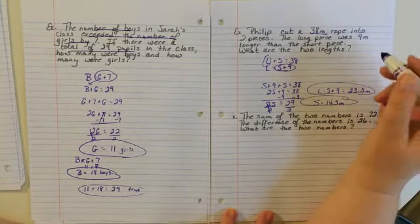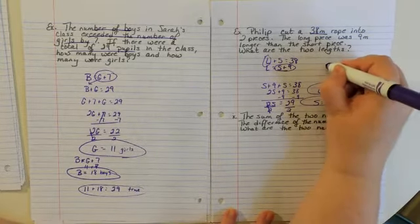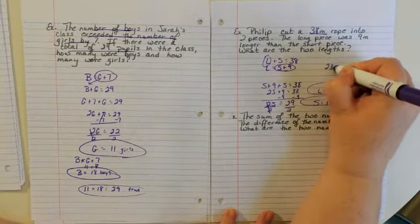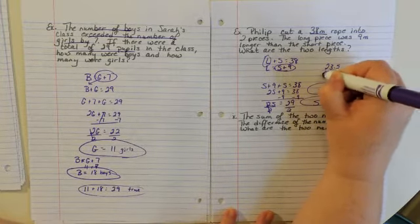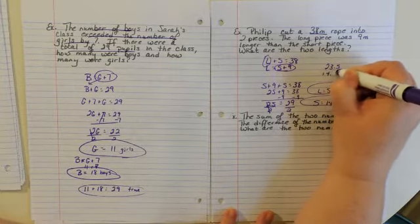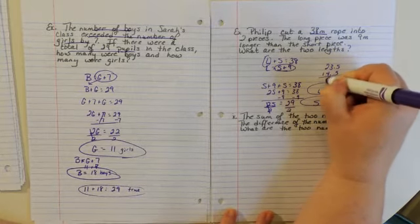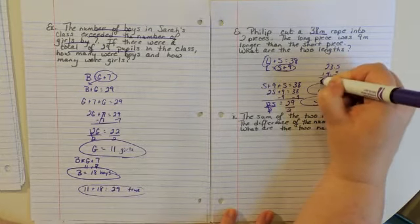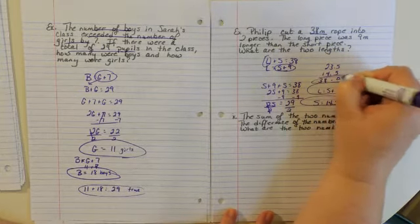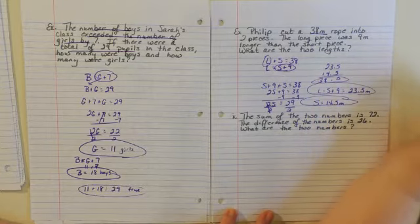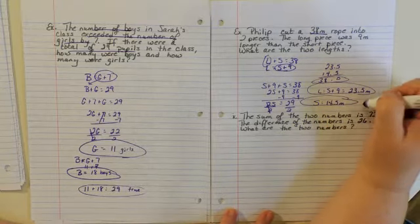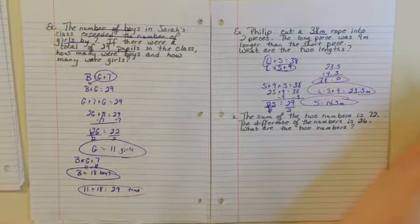If we add 23.5 plus 14.5, that equals 38 — so that's your check. Here's your answer.